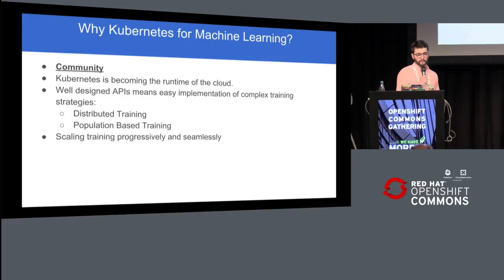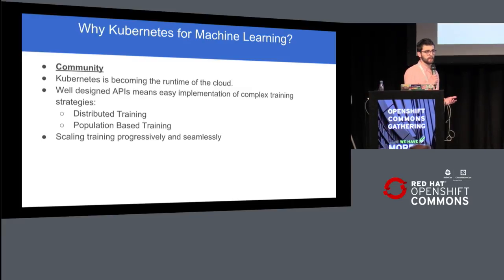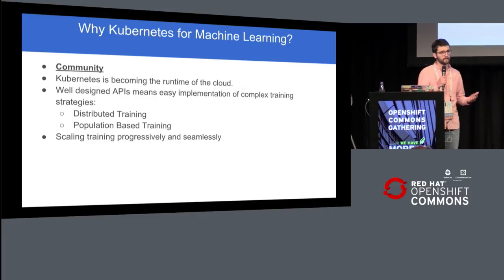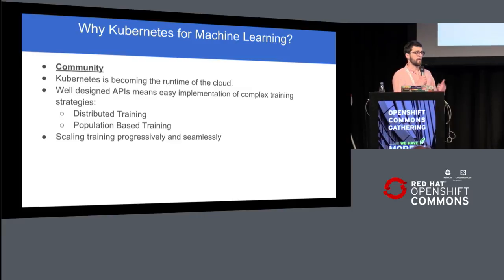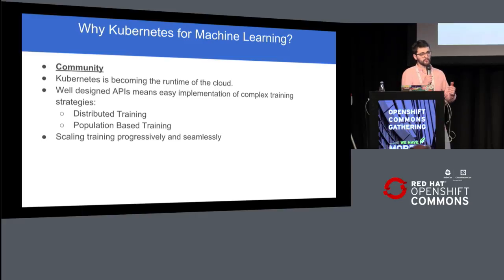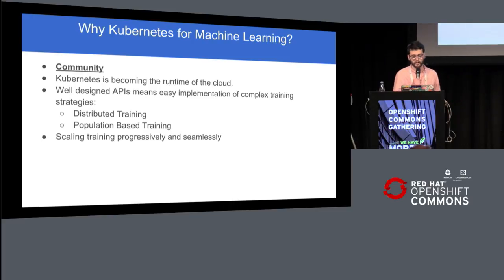I want to talk about why we're interested in Kubernetes for machine learning in the first place. Kubernetes was developed with microservices in mind, not GPU workloads. So why does it make sense? The biggest, strongest point for Kubernetes is the community — it's just amazing and so large. If you're a company wanting to do machine learning training and you want to deploy a new training strategy like population-based training, there's a good chance of finding an open source implementation already working for you on Kubernetes.